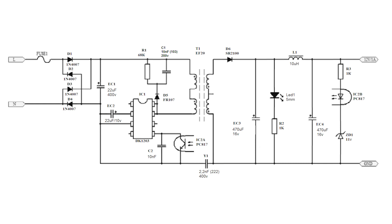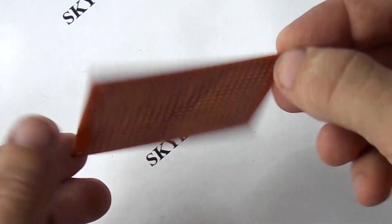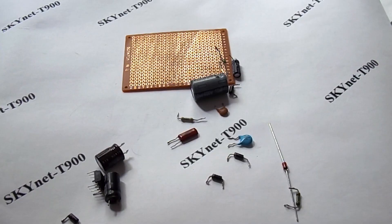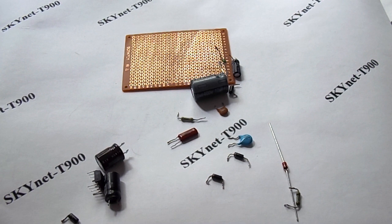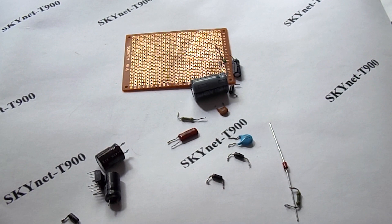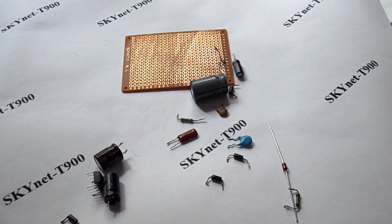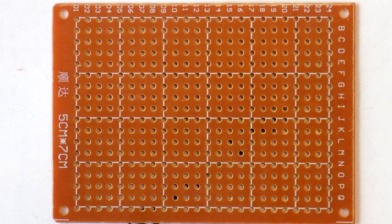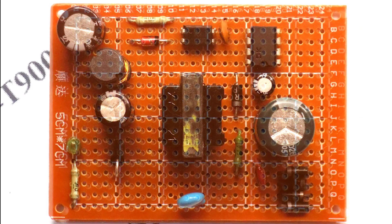To create it, we need about 20 parts. We will solder the details on such a board for homemade products. Its dimensions are 5 by 7 centimeters. To create a power supply, we just need to wind the transformer and solder all the details on the board. After several hours of work, we get such a cool device.